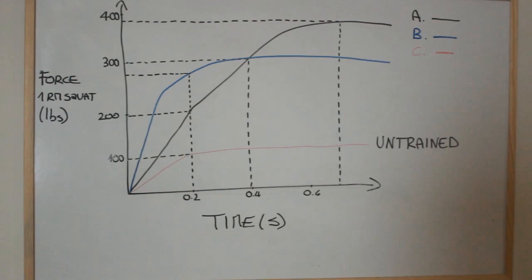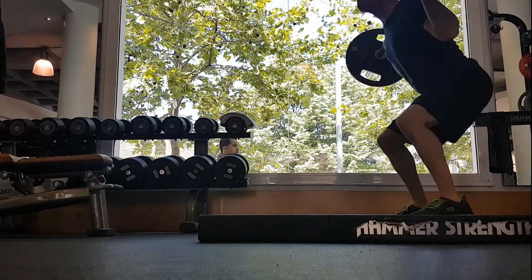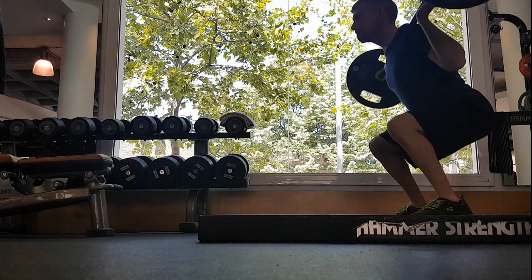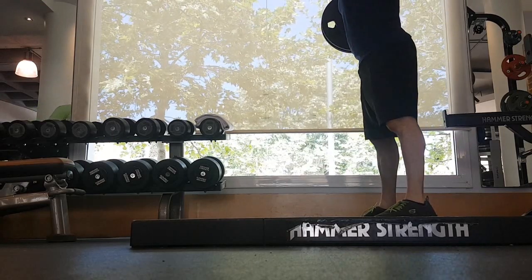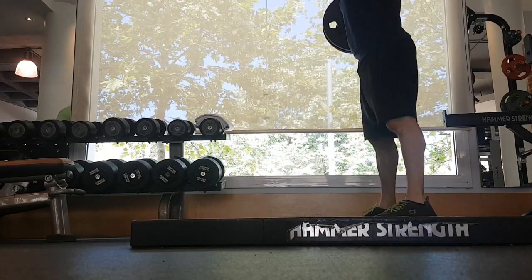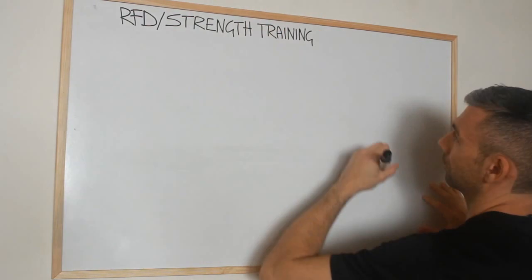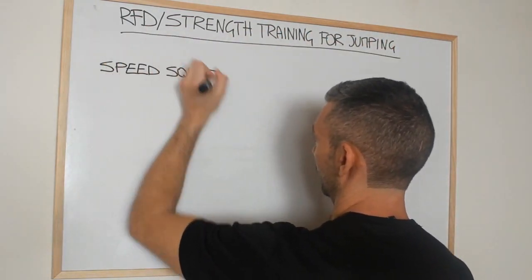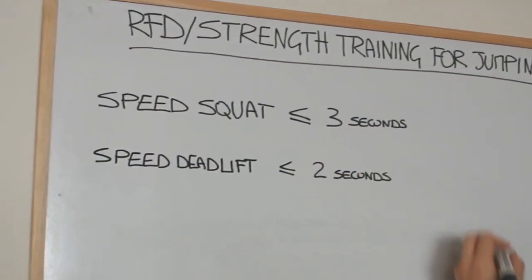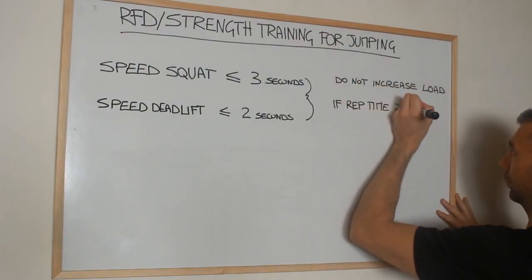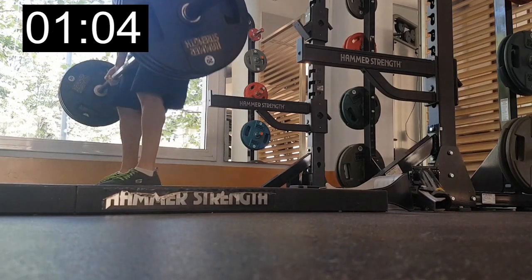Key to bringing about an improvement in rate of force development is to try to lift weight as fast as possible. Because of the high loads involved you won't be able to move as fast as in a jump, and you don't need to either. As long as you try to move explosively, you're causing the central nervous system to adapt and recruit more motor units. Weight training should be done in a way that does not hinder your ability to apply force at high speeds. You should aim to perform each repetition in three seconds or less for the squat and two seconds or less for the deadlift. In general, if you're training for athletic performance and not just for limit strength, you should not increase the weight if it takes more than four seconds to complete one rep.